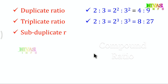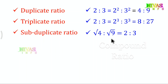Now, subduplicate ratio is the reverse. What do we say about duplicate ratio? In 2 is to 3, the duplicate ratio is 2 squared is to 3 squared. So subduplicate is the reverse of that. For example, the subduplicate ratio of 4 is to 9 is root 4 is to root 9, which equals 2 is to 3.